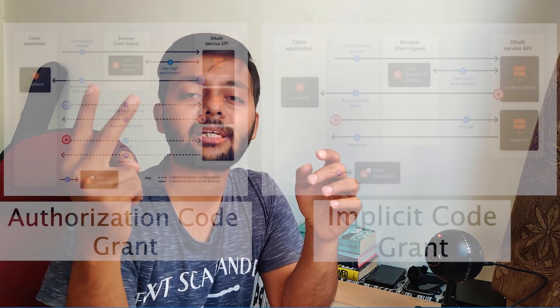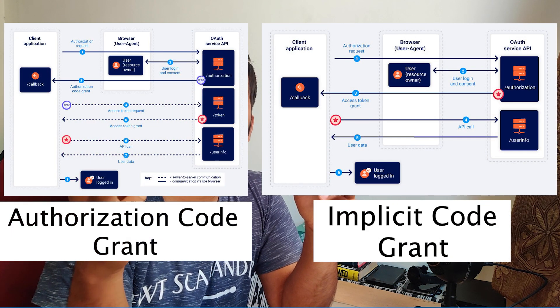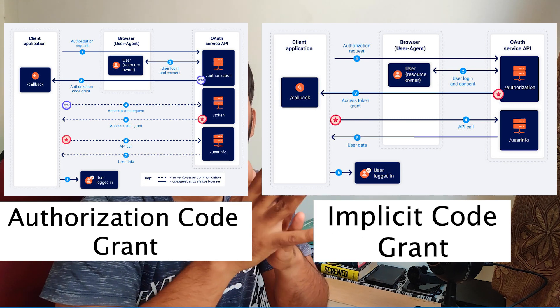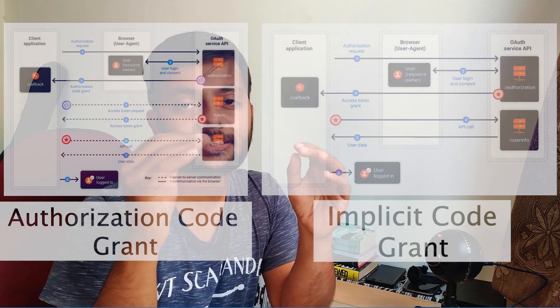This whole process is called an OAuth flow. Because the specification is lenient there are many flows, but the two major ones are authorization code grant and implicit grant. I'll talk about authorization code grant first because it involves more steps — once you understand that, implicit grant is just skipping a few of those steps.